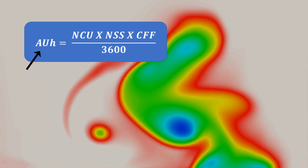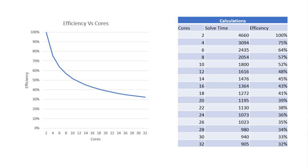AUH is Allocation Unit Hours, which is based on NCU (the number of processing unit cores), NSS (the number of solver wall clock seconds), and CCF (the peak processing unit clock frequency). So clearly you want to hit your maximum frequency and stay there. The trade-off between cores and solve time can be complicated, and I imagine that teams would spend a lot of time trying to improve parallelisation.